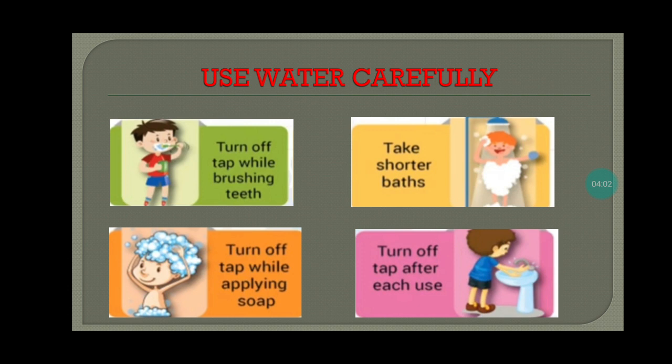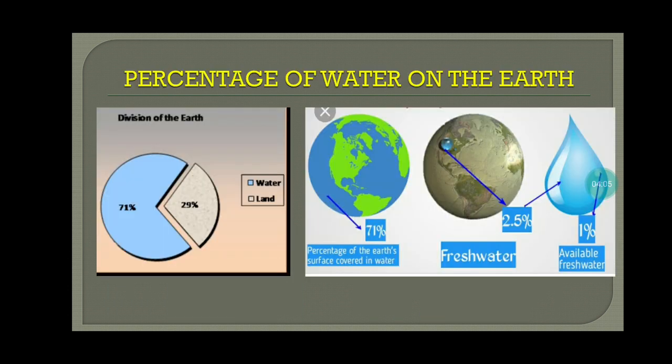From this picture, we come to know to use water carefully. In this picture, the percentage of water on the earth is given. There is 71% water available on the earth, but from this 71%, only 2.5% is fresh water. That's why we have to use water economically, because only 2.5% water is useful to us. Thank you.